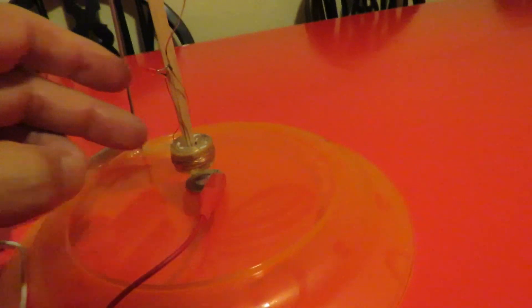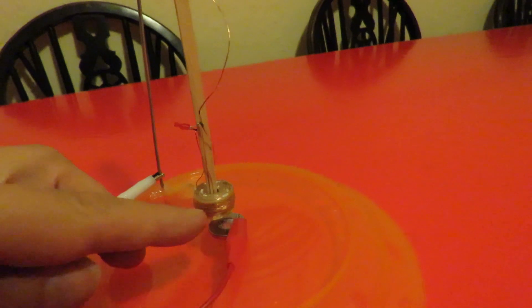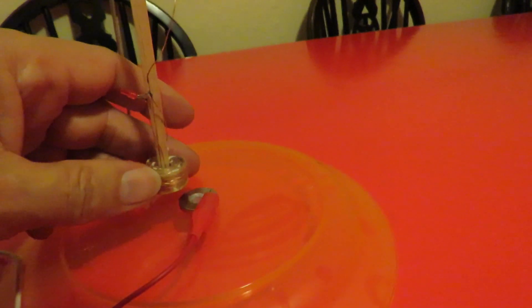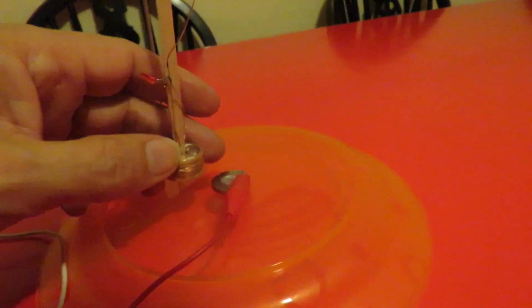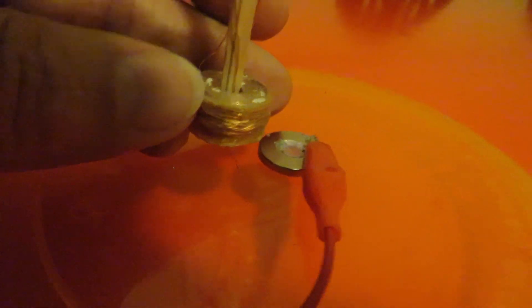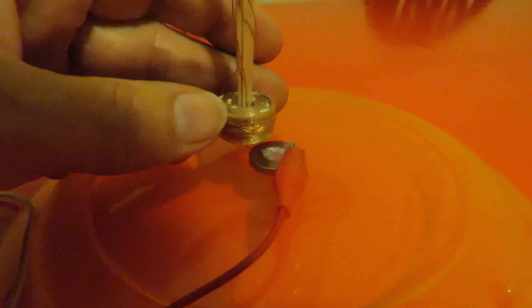Every time it flicks itself out it breaks the circuit because at the moment there's a little bit of wire, I don't know if the camera will pick it up sticking out the bottom there, that touches that magnet.